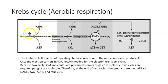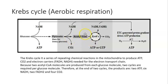Glucose, through the process of glycolysis, gives us two pyruvate molecules for every glucose. Pyruvate is then processed to create acetyl-CoA, and acetyl-CoA will enter the Krebs cycle. The Krebs cycle is a series of repeating chemical reactions in the mitochondria that produce ATP, carbon dioxide, and electron carriers FADH and NADH, necessary for the electron transport chain.